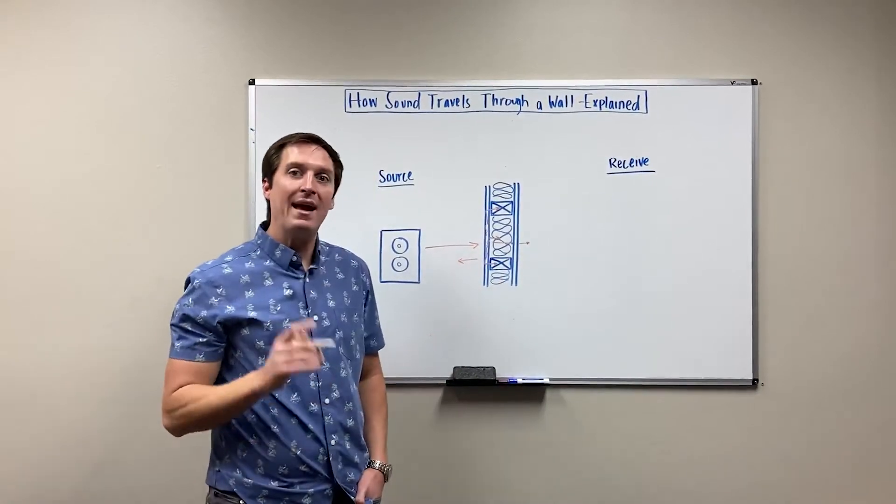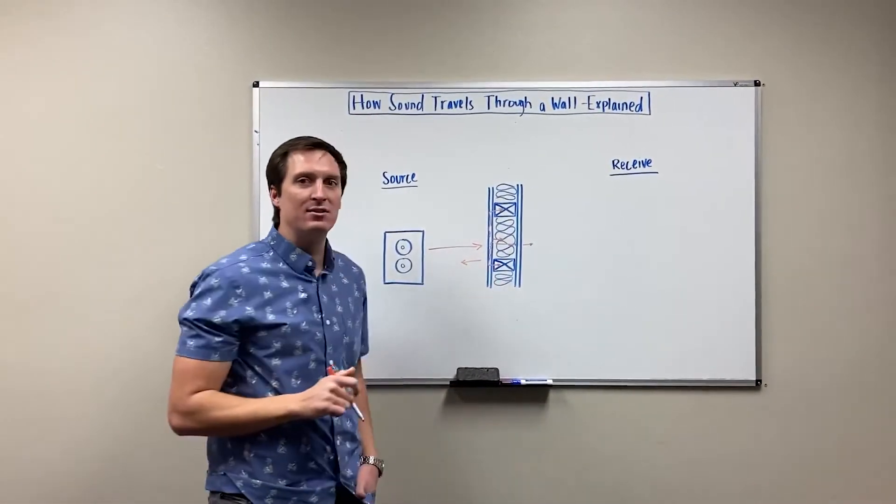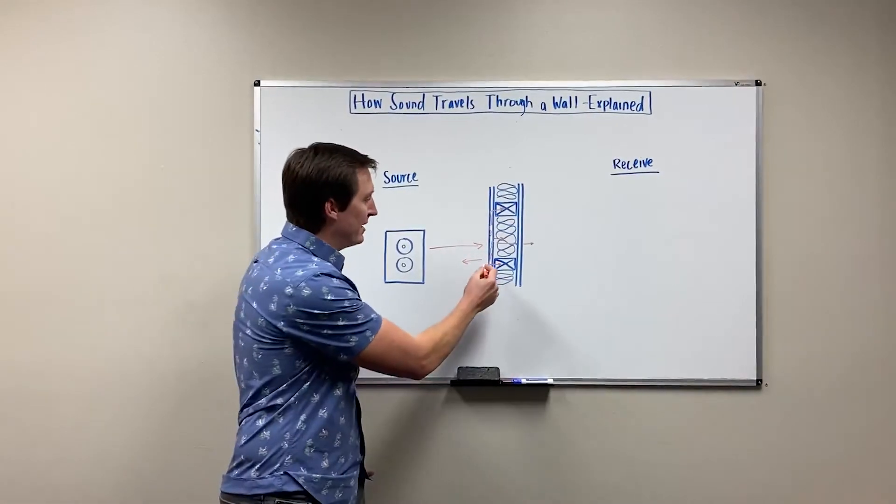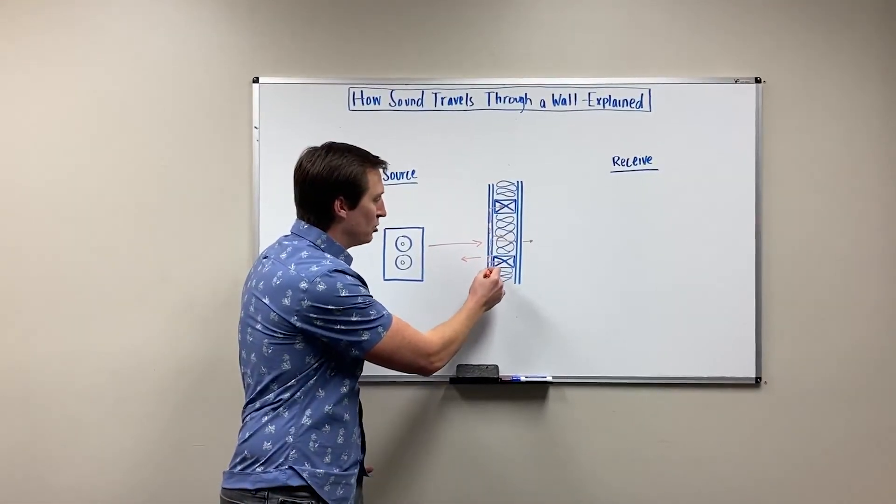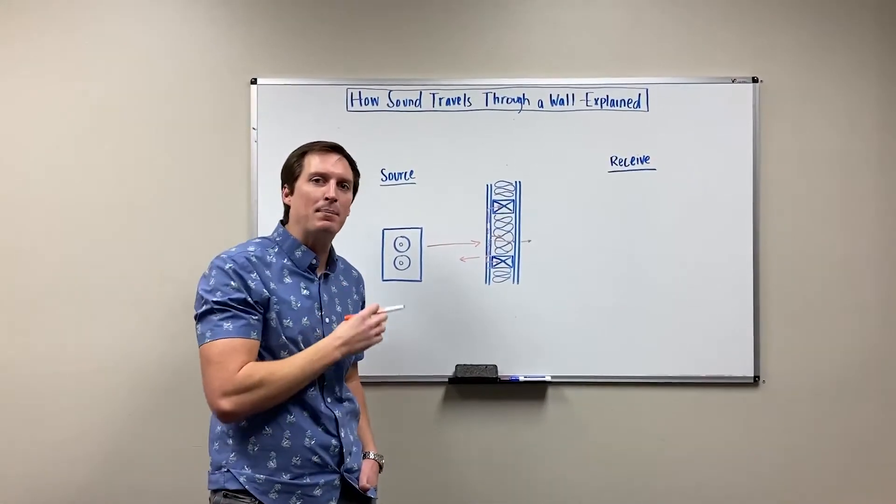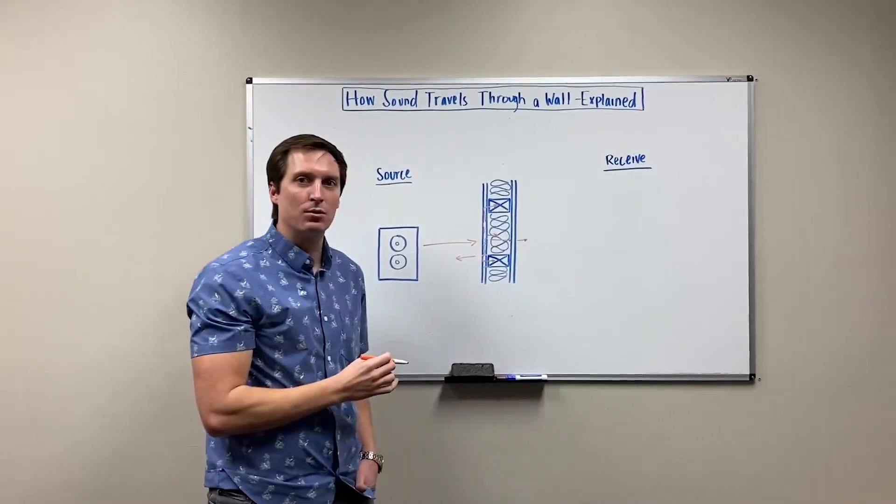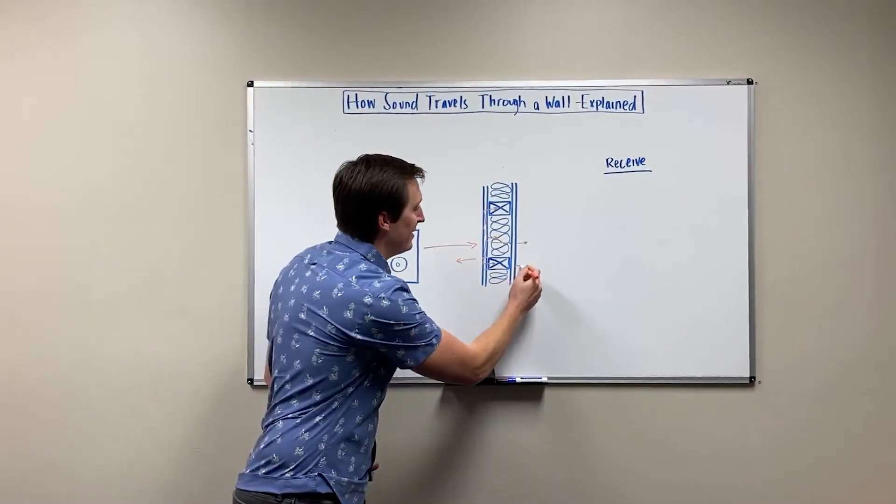However, the path of least resistance is certainly through the studs themselves. You can see how wide this two-by-four stud is. If it's a two-by-six, it's equally ineffective at stopping the transmission of sound. This is a highway or a short circuit through the wall, and you can see a significant amount of noise will pass through the studs.